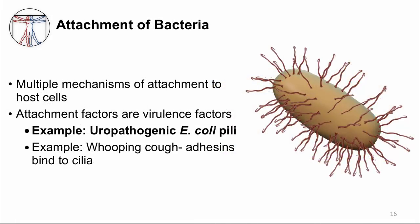Once they reach their preferred location, microbes have multiple mechanisms to attach and avoid clearance. Attachment is so important for pathogens that they have molecules and appendages for this purpose. Attachment is often essential for disease, and thus they are considered virulence factors.